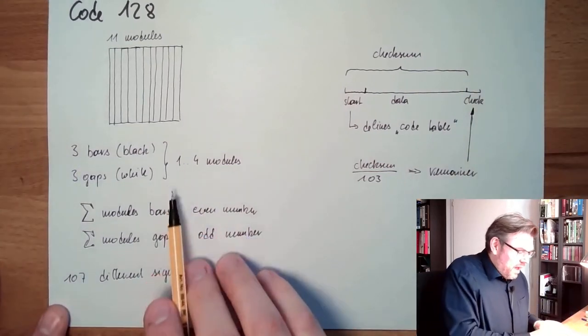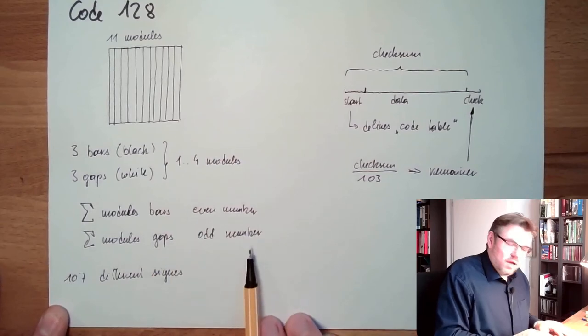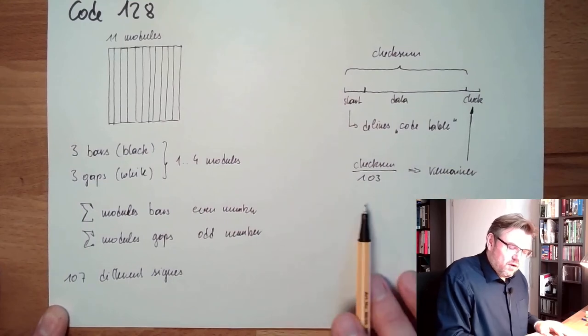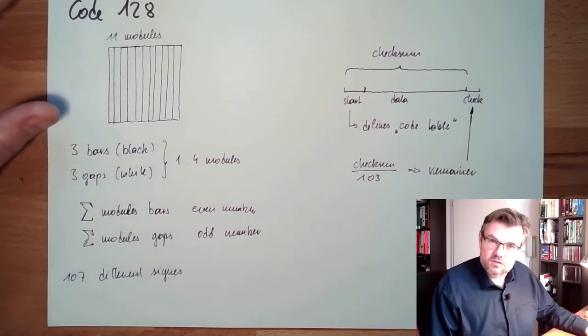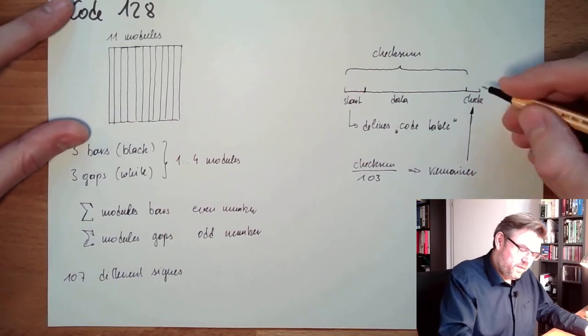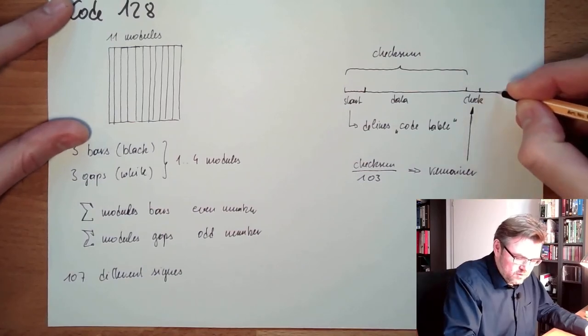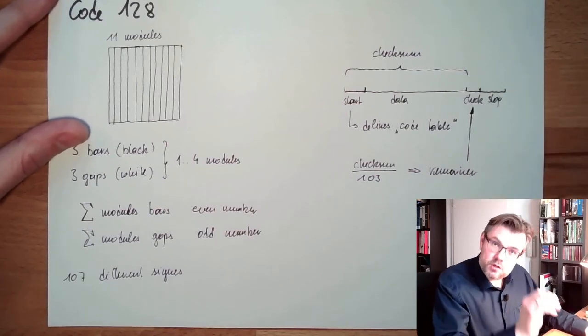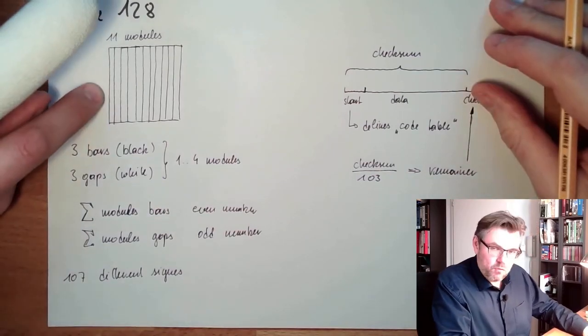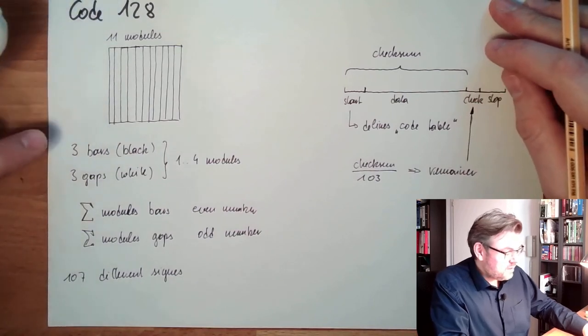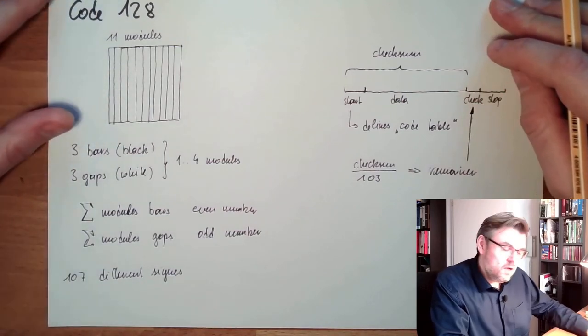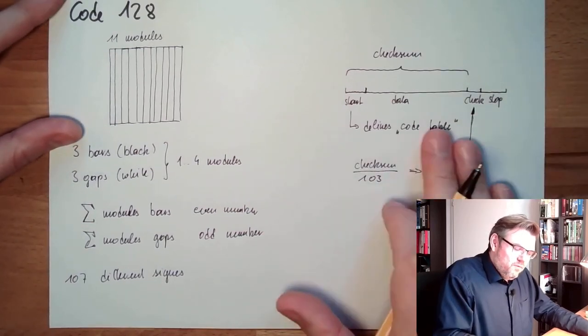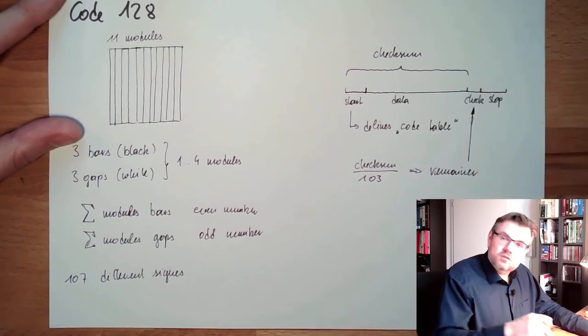And then if I read it back, I have this even and odd numbers check. At the end, I have the check sign. And if the checksum and the check sign are following these rules of fitting together, I'm pretty sure this is okay. And then after the check sign, there's the stop sign. The stop sign is a special sign. It doesn't consist of 11 modules, but of 13. And it doesn't have three bars, but four. So the stop sign is special and is unique. It does not matter in which code table. In each code table, the stop sign is the same.